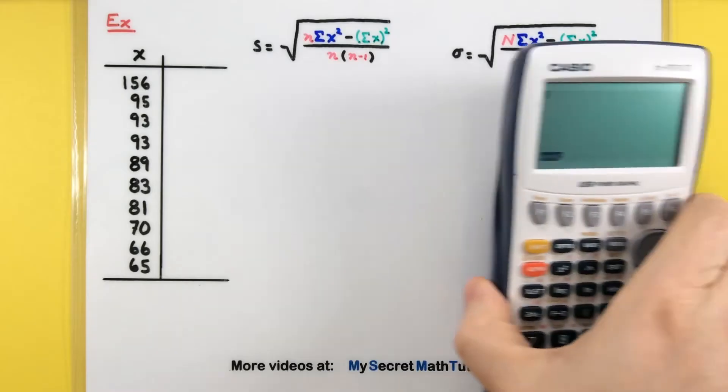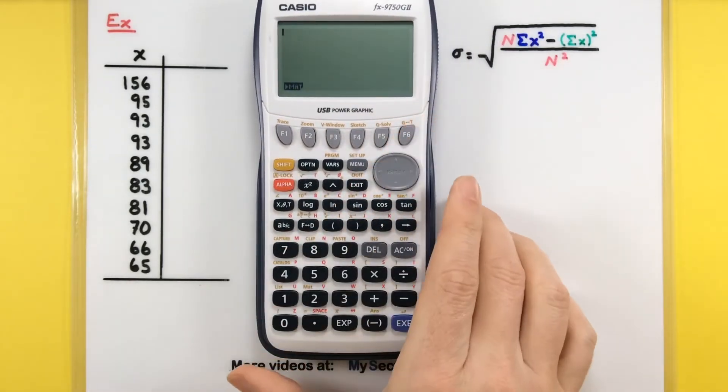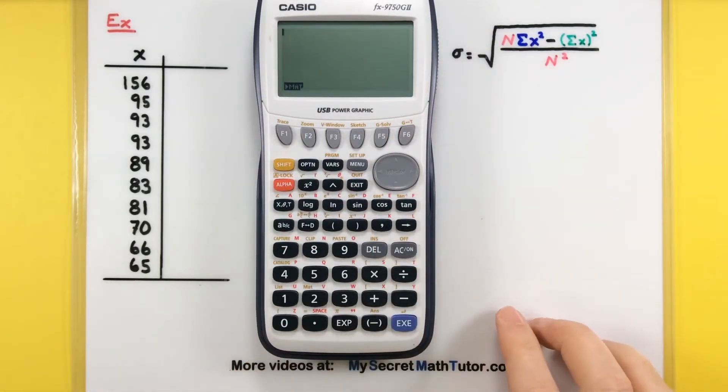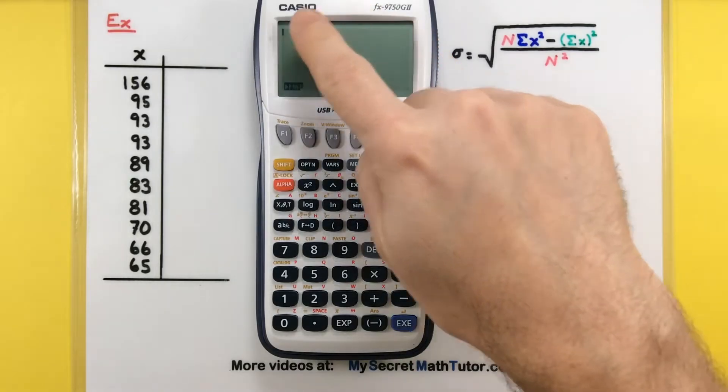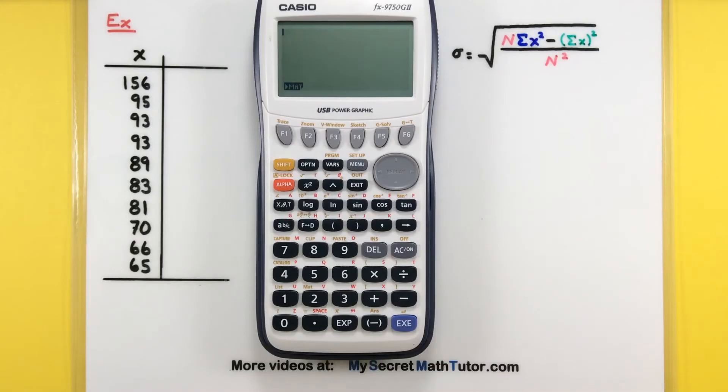The first step is getting our data into the calculator. To do that, we need to access the statistics menu. If you've been using the calculator, you're usually in the math menu, so it can be hard to tell where you are.